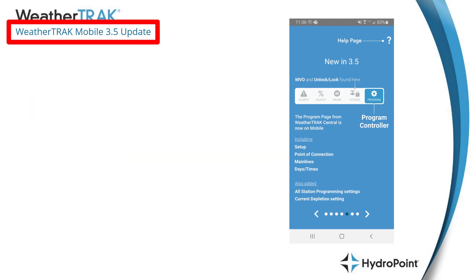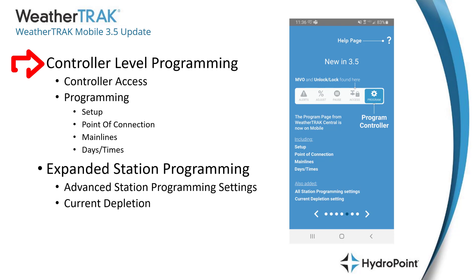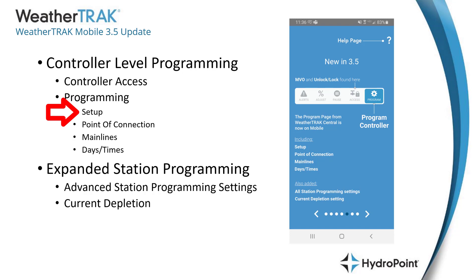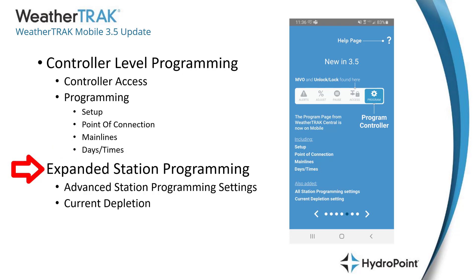With the WeatherTrack Mobile 3.5 update, we've upgraded access to the controller level programming, including consolidating controller access features like Master Valve Override and the controller lock, and adding access to valuable programming features from the app — including all options in the setup menu, the ability to set up flow sensors with points of connection and main lines, access to all water restriction information including the ability to change the days and times programs will water, and expanded station programming capabilities with advanced station settings and the ability to manage a station's current depletion.